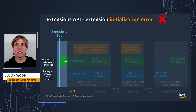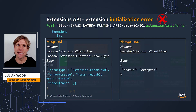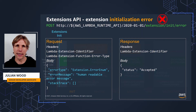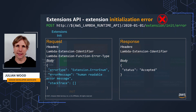If the extension init process has an error after registering, you can report that back to Lambda with a POST to /init/error with the detail of the error, and you can include a stack trace. After Lambda receives the error, it doesn't accept any further API calls. Your extension should exit and Lambda restarts the execution environment.